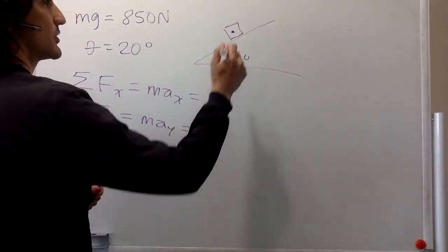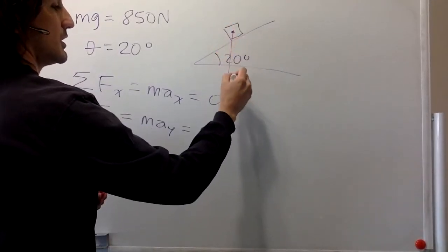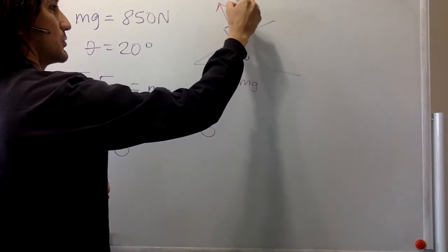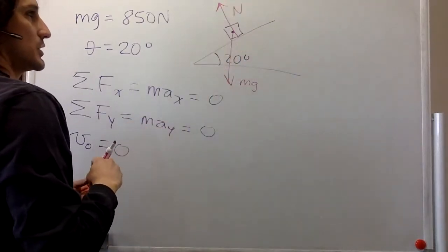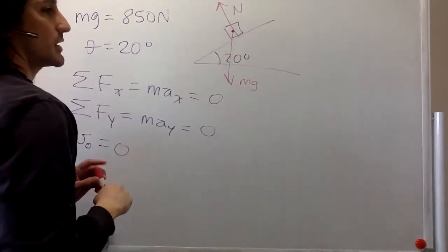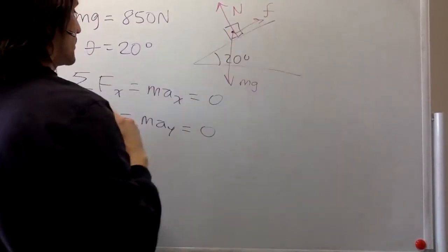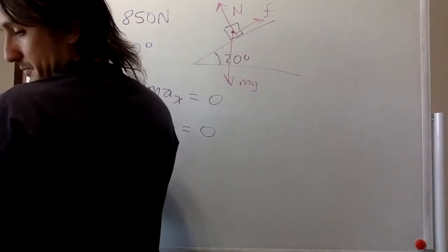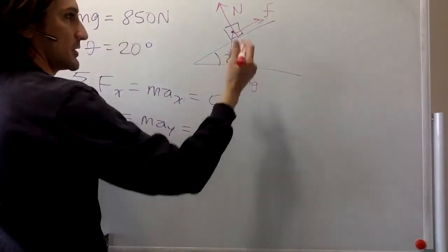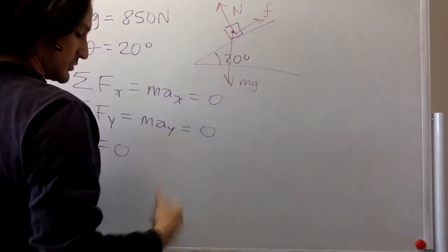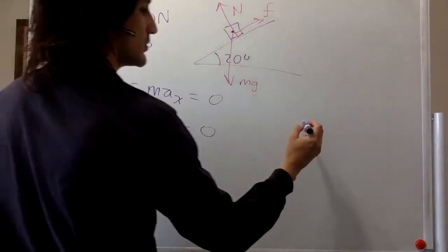So we can draw it. We have forces: gravity acting down like that, and the normal acting up like that. And then we're going to have some sort of friction, right? And that is keeping the person in place. Otherwise, he will slide down.